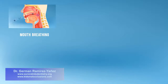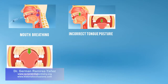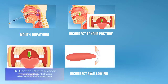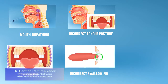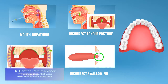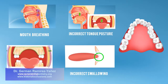All those dysfunctions — mouth breathing, incorrect tongue posture, open mouth, and incorrect swallowing — are going to continue affecting the growth and development of your upper and lower jaws. As a consequence, there is less room for your teeth, and they become crooked.